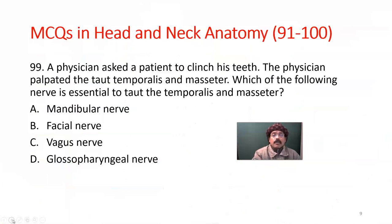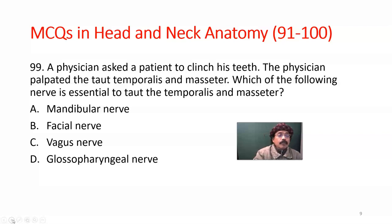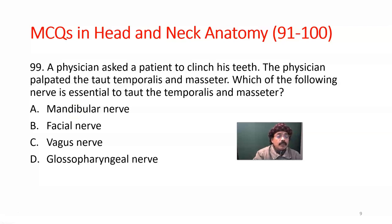Question number 99. A physician asked a patient to clench his teeth. The physician palpated and tested the temporalis and masseter muscles. Which of the following nerves is essential to innervate the temporalis and masseter? The nerve supply of temporalis and masseter — the answer should be the mandibular nerve. This nerve provides motor innervation to all the muscles of mastication: temporalis, masseter, lateral pterygoid, and medial pterygoid — all are innervated by the mandibular nerve.